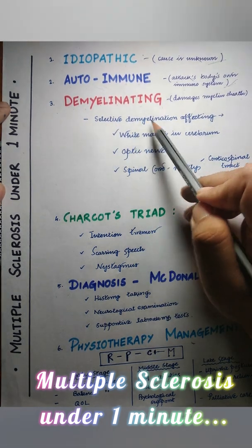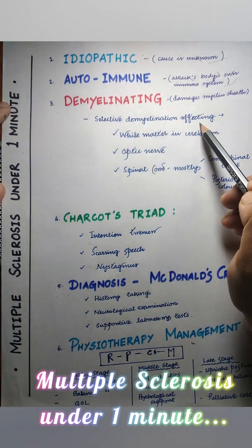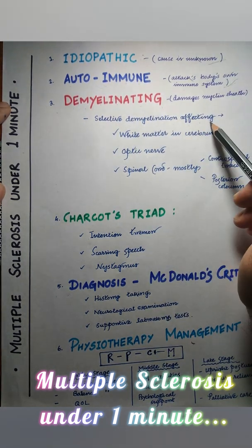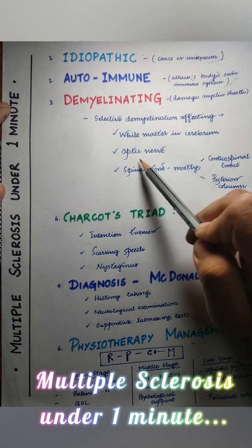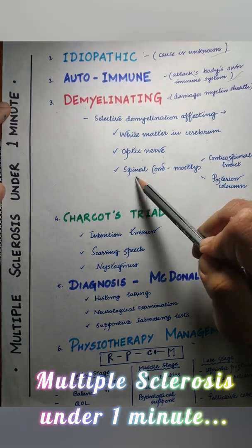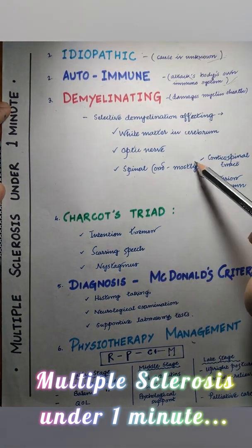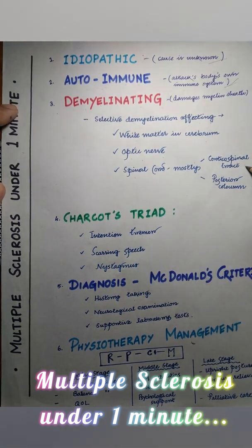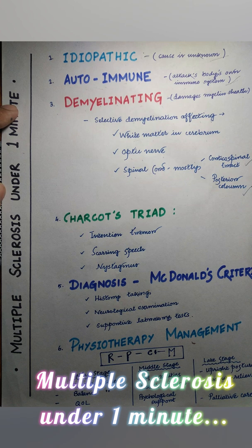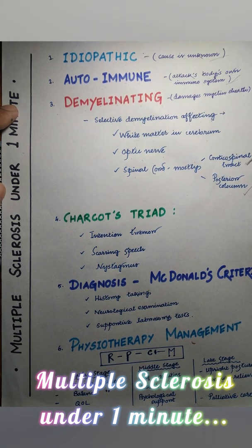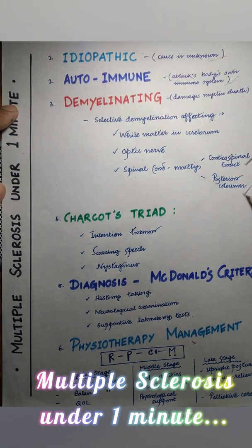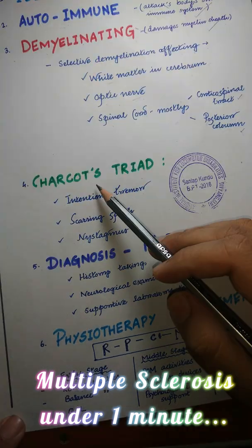Selective demyelination occurs mainly affecting the white matter in the cerebrum, the optic nerve, and the spinal cord — mostly the corticospinal tract and posterior column. Involvement of the corticospinal tract affects voluntary movement, while involvement of the posterior column affects mostly balance.